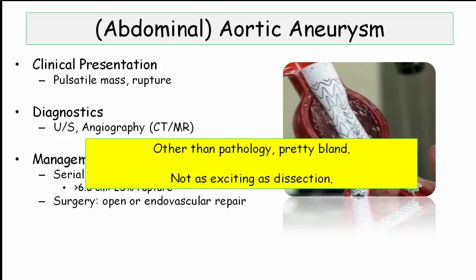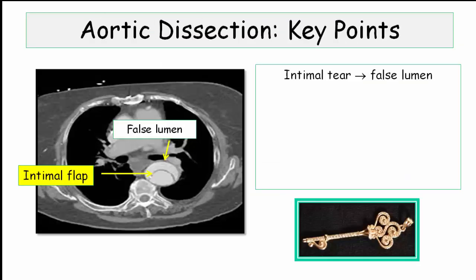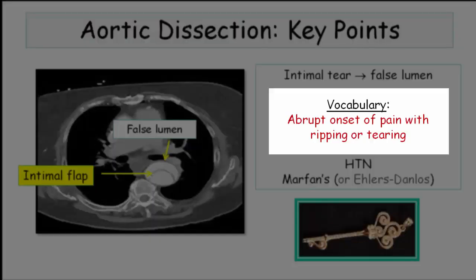Dissection is quite a bit more interesting. You will need to be familiar with the concept of the intimal tear as the initiating step. The graphic demonstrates the consequence of that tear — blood dissects the media, creating a tissue flap called an intimal flap, while also demonstrating a false lumen. The false lumen represents hematoma that collects in the dissected vessel wall. The language of dissection is essentially diagnostic on the boards: when they describe the abrupt onset of ripping, tearing, or knife-like pain in the mid-chest that radiates to the back, the diagnosis is aortic dissection.